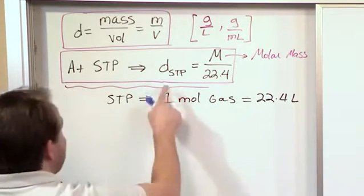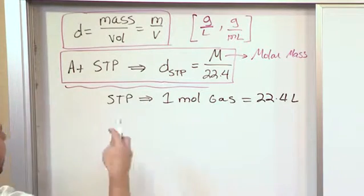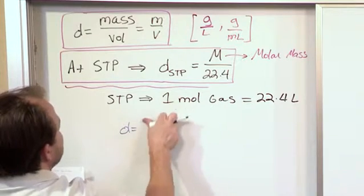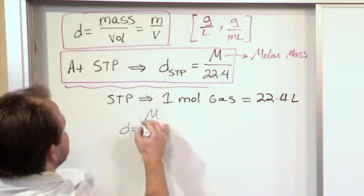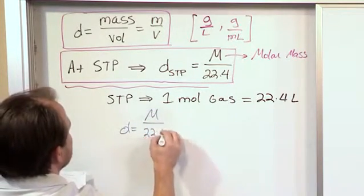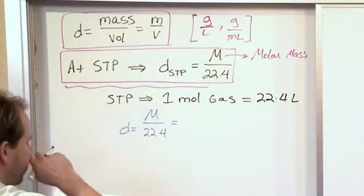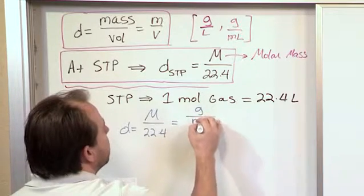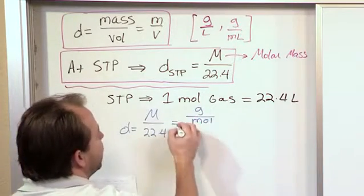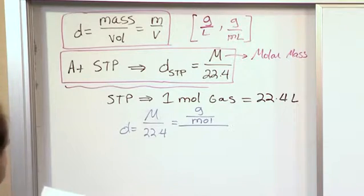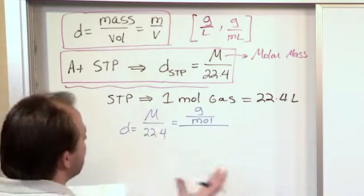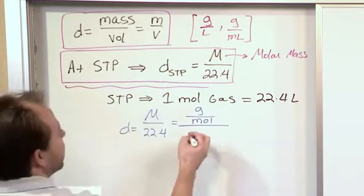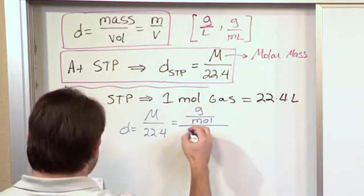So, if I were to actually calculate the density of any gas at STP, the density is going to equal, what we're claiming is you can write it as capital M over 22.4. Well, the reason this works is because when you think about it, capital M is grams per mole. That's what capital M is. That's what molar mass is. And on the bottom here, the 22.4 comes from this rule here, 22.4 liters. And so, what this is basically saying is 22.4 liters.